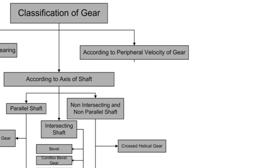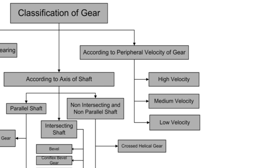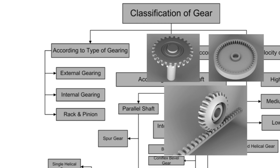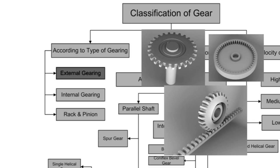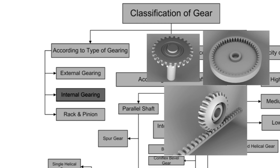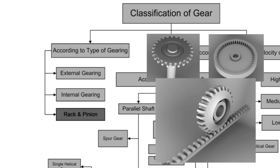According to peripheral velocity of the gear, gears are classified into three groups: low-velocity gears, medium-velocity gears, and high-velocity gears. According to the types of gearing, gears are classified into three groups: external gearing, internal gearing, and rack and pinion gears.